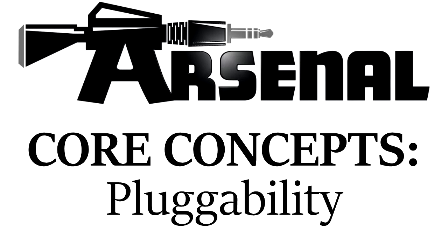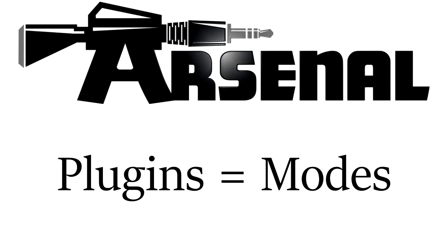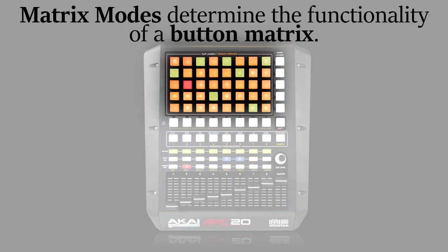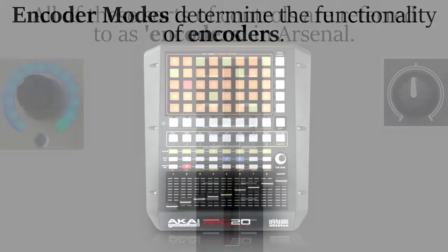Plugability refers to the ability for an application or a script to run plugins. Within Arsenal, we don't actually use the term plugin. Instead, we refer to our plugins as modes. And there are two types of modes: Matrix modes, which determine the functionality of a button matrix, and encoder modes, which determine the functionality of encoders.